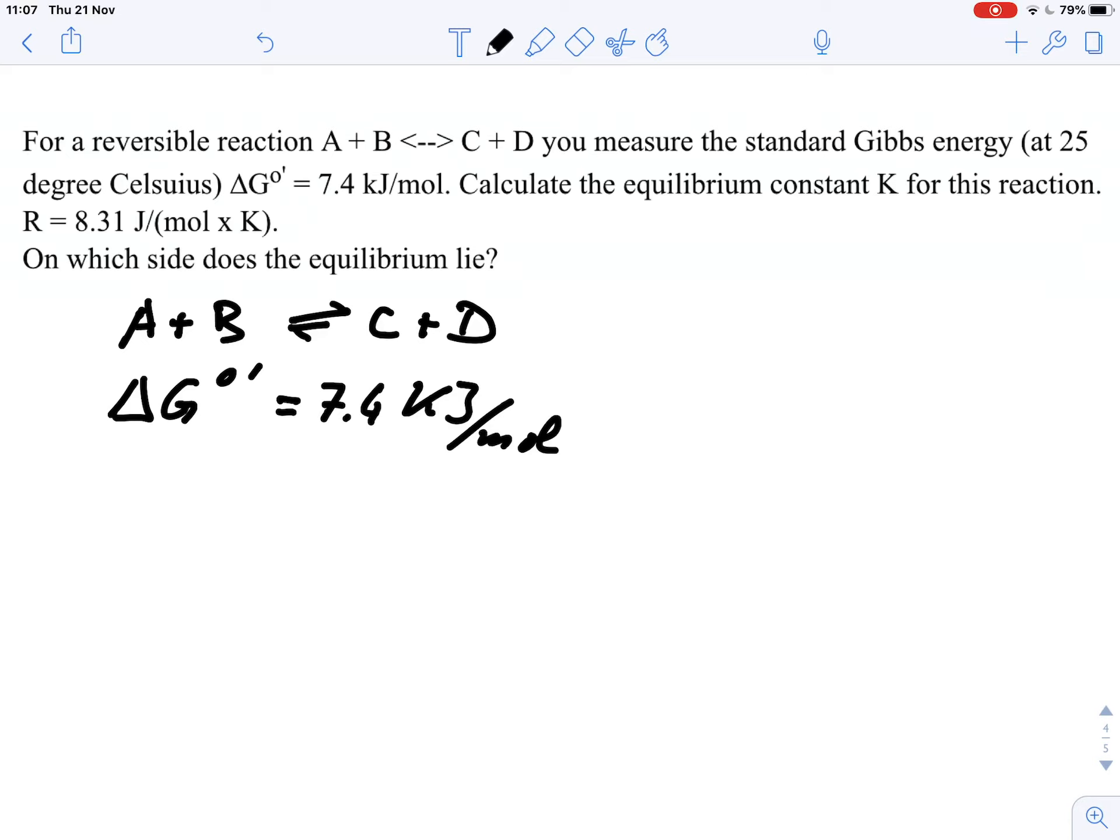We also know that delta G can be written as minus RT ln of the equilibrium constant. And that is basically this thing is what we are looking for.